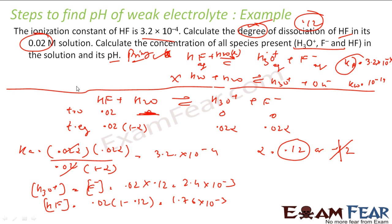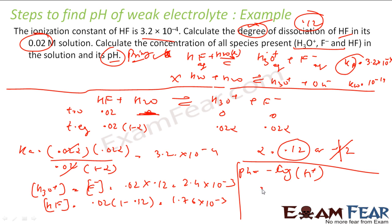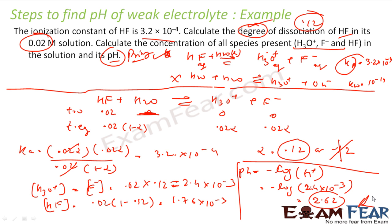Now we find the pH. pH = −log[H⁺] = −log(2.4×10⁻³). Solving this, we get pH = 2.62. That is our answer.